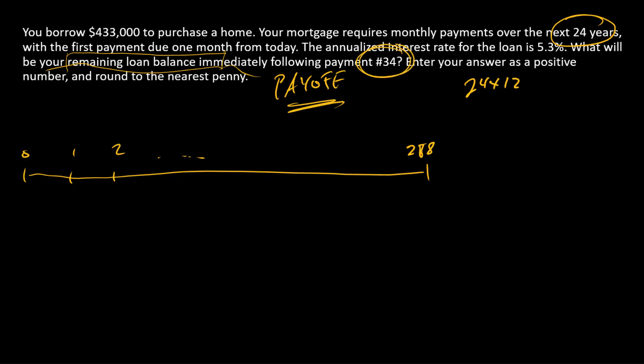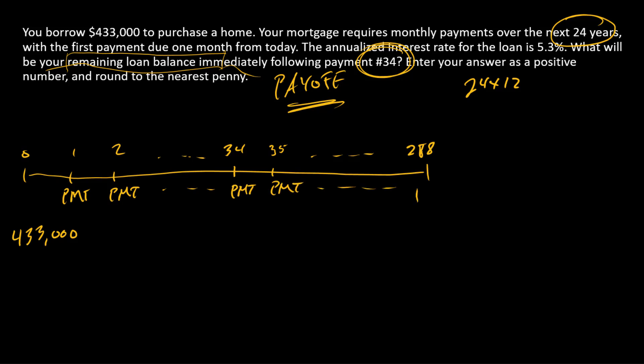We're also interested in what happens immediately after payment number 34. We've got a present value of $433,000 and a payment amount that we need to find.